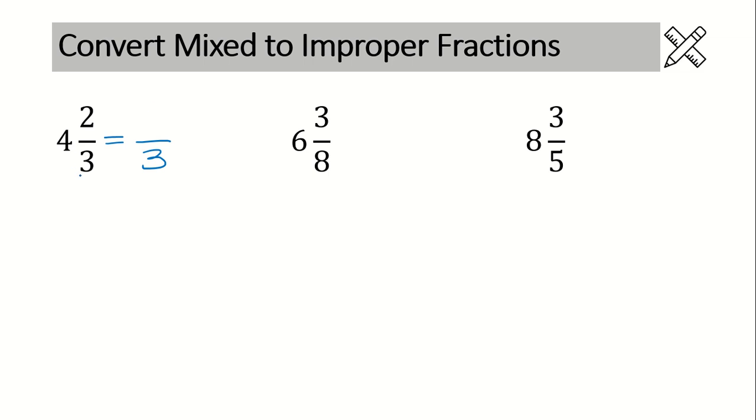You take your denominator on your mixed number and you want to multiply it by the whole number. In this case, 3 times 4. After you get that answer, you just want to add the numerator. And once you get that answer, that is your numerator on the improper fraction.